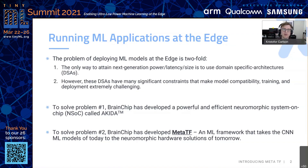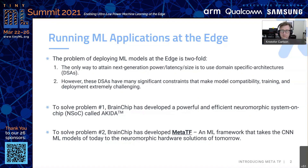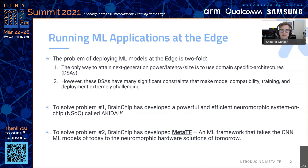To solve problem number one, BrainChip has developed a powerful and efficient neuromorphic system on a chip called Akita, and I won't be talking about the hardware specifically today very much. What I'm really talking about is our solution to problem number two, the software problem. That's the idea that we've developed something called MetaTF, which is a machine learning framework that takes the CNN machine learning models of today to the neuromorphic hardware solutions of tomorrow — and by tomorrow's hardware solutions, we're implying Akita. The name MetaTF uses the Greek word for 'after' or 'post,' meaning this is what happens after you've done your training in TensorFlow — how do you deploy this thing?